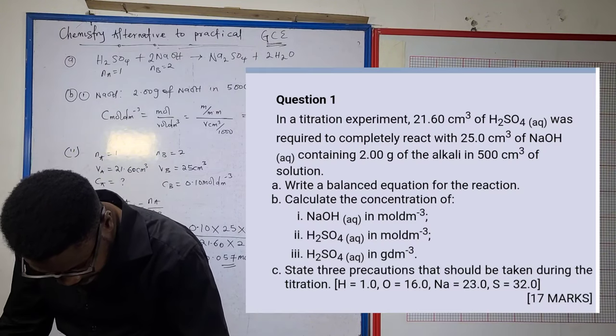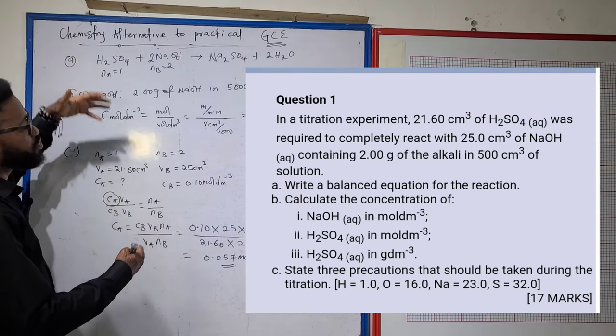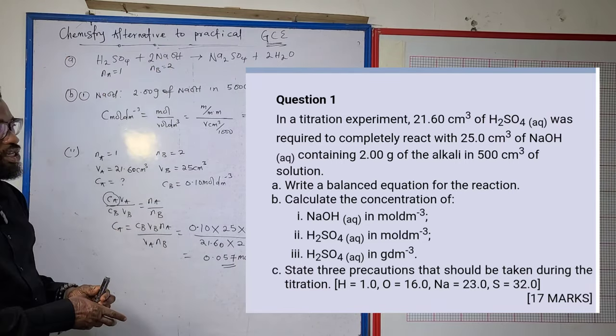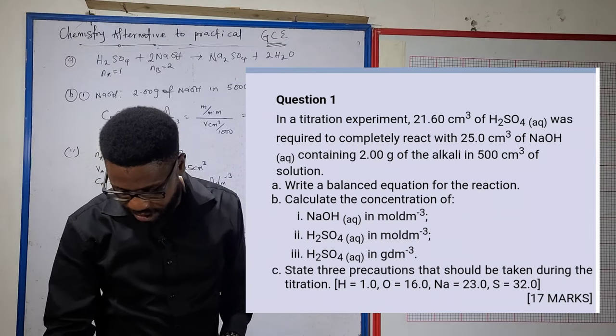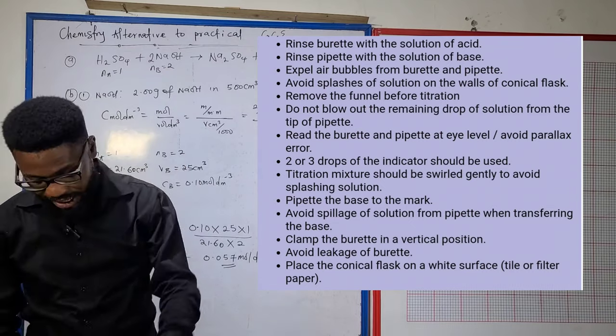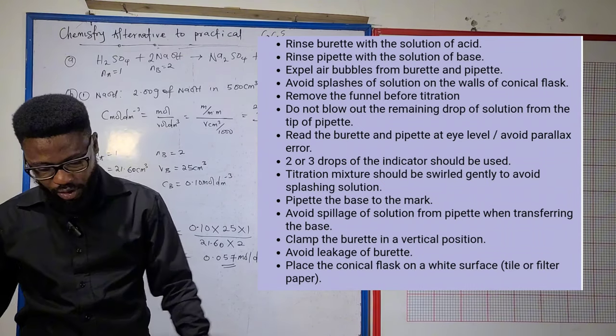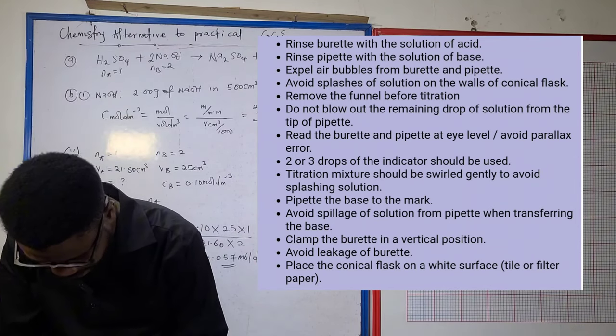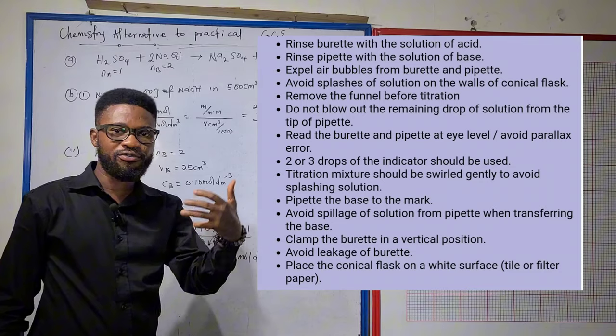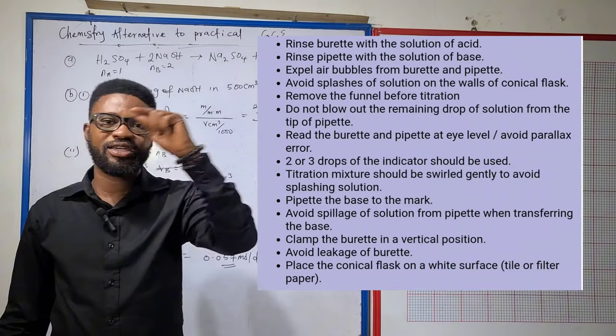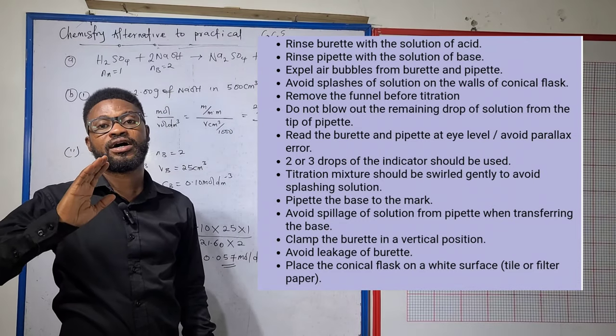For question c, state three precautions that should be taken during this titration. In this titration, we're dealing with acid in the burette and a strong base measured with a pipette and put in the conical flask. You can see on your screen I have about 14 precautions from which you can take three. The first precaution: rinse the burette first with distilled water, then rinse with the acid to be used. In this case, we're using dilute sulfuric acid.